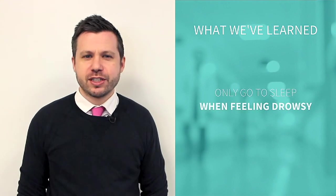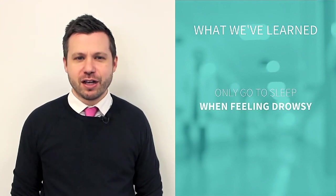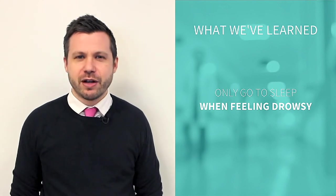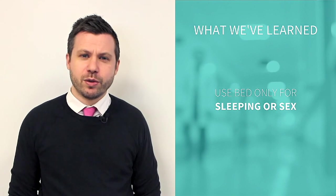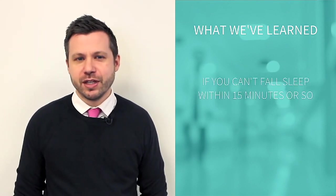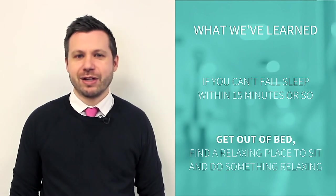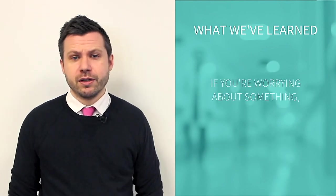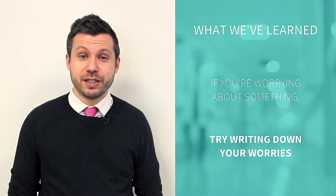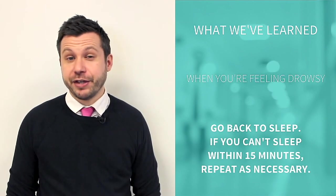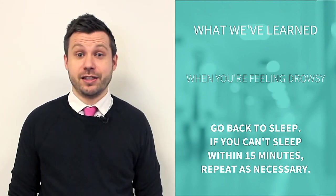Remember to only go to sleep when feeling drowsy. The purpose of this is to prevent tossing and turning, which causes us emotional stress and tends to feed our insomnia. Also, try to use the bed only for sleeping or sex. If you can't fall asleep within 15 minutes or so, get up out of bed and go find a relaxing place to sit, like a chair or a couch, and do something relaxing. If you are worrying about something, try writing out your worries as we showed in this video. When you are feeling drowsy enough again, go back to sleep, and if you can't sleep within 15 minutes again, repeat as necessary.